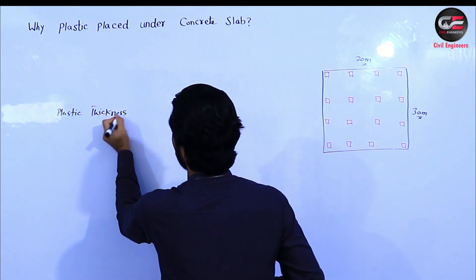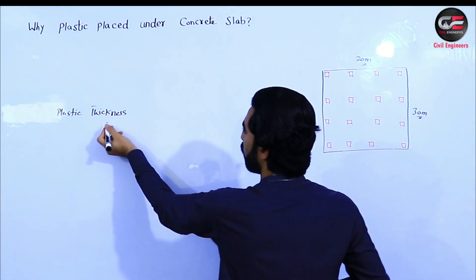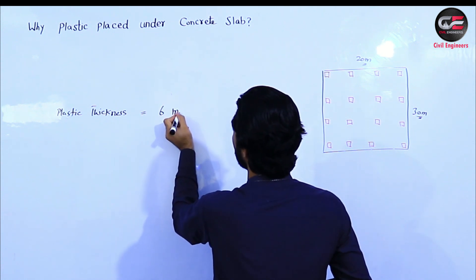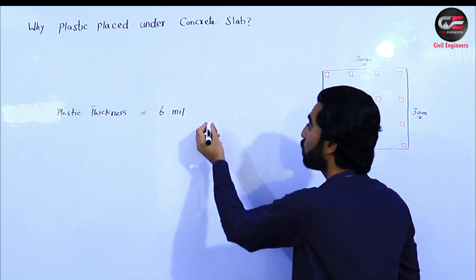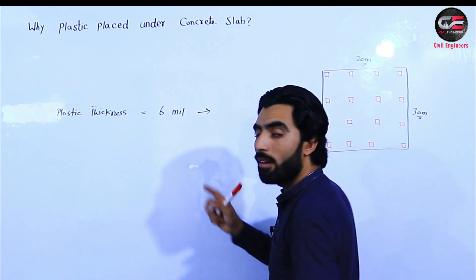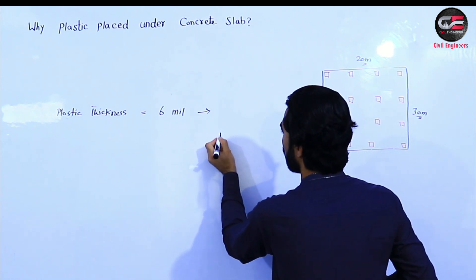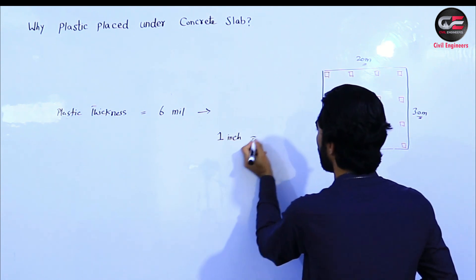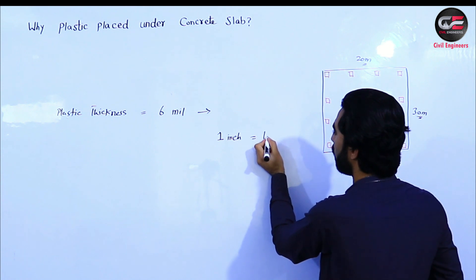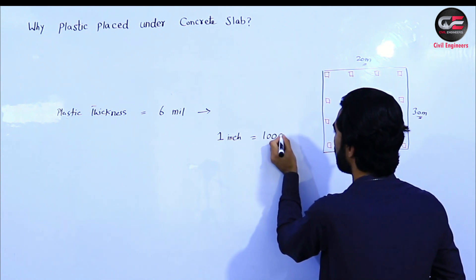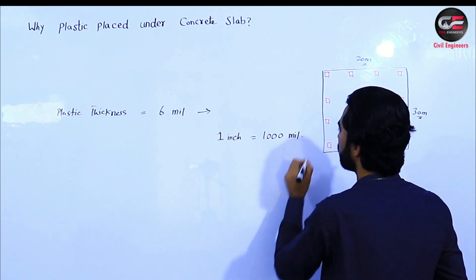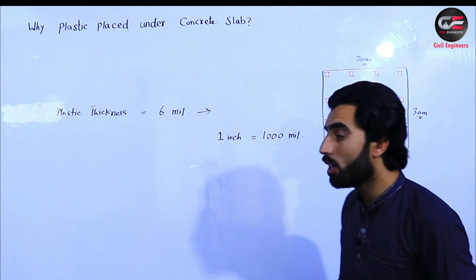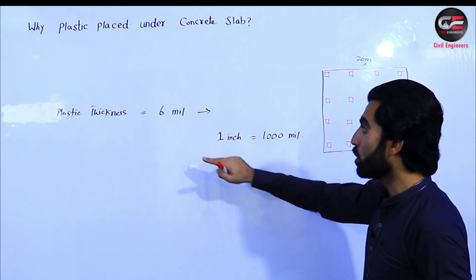The plastic thickness which we are placing under the slab should be 6 mil. In one inch, we have one thousand mils, so 6 mil is the specified plastic thickness that should be placed under the slab.